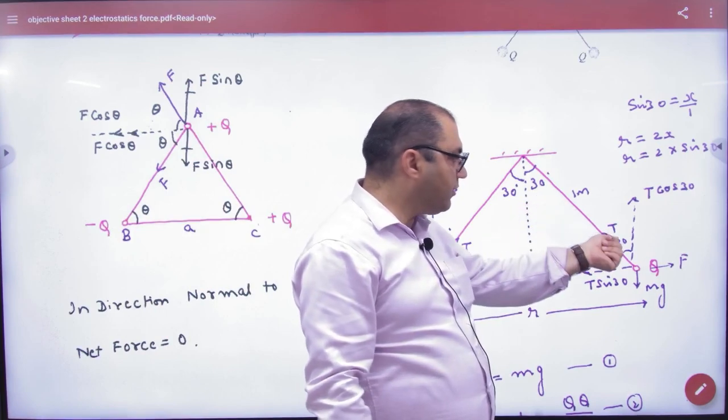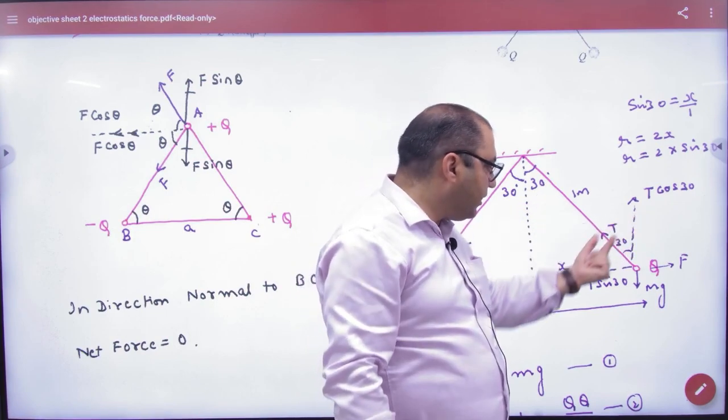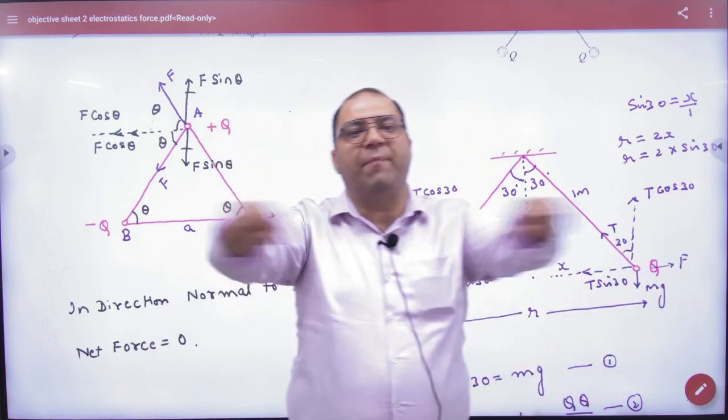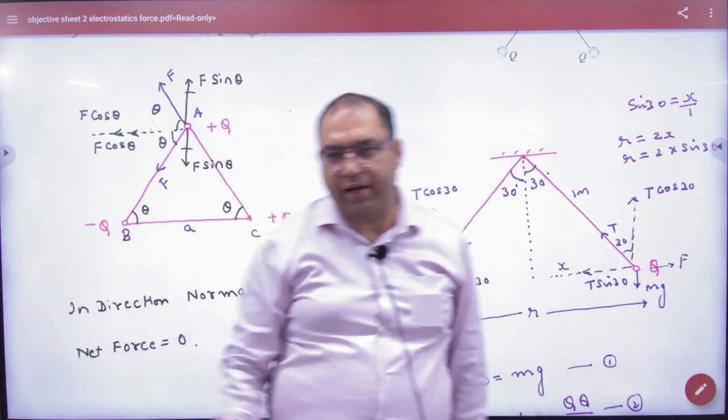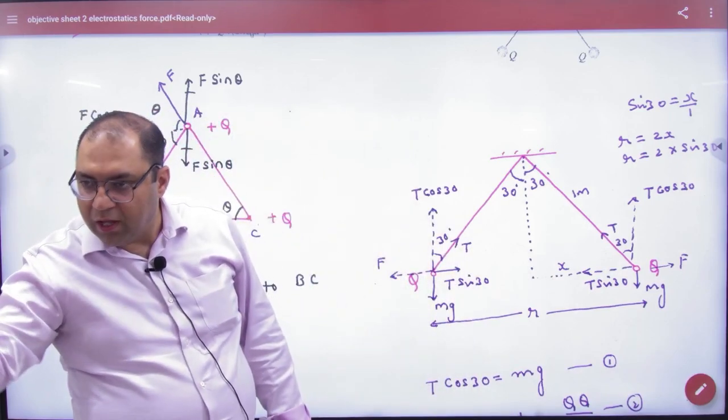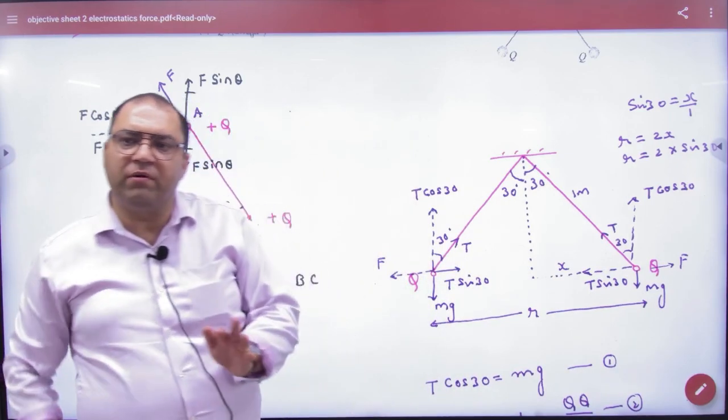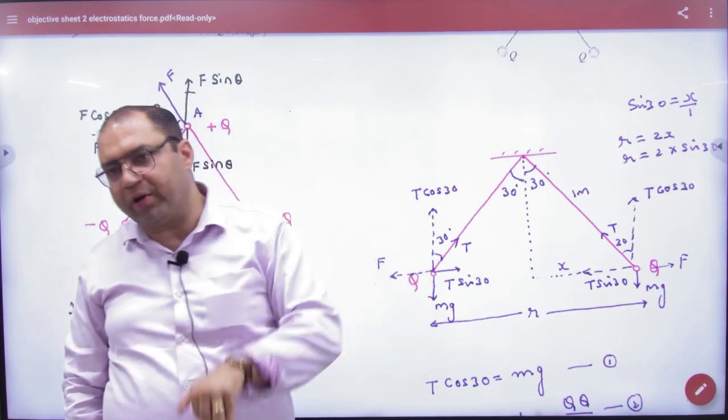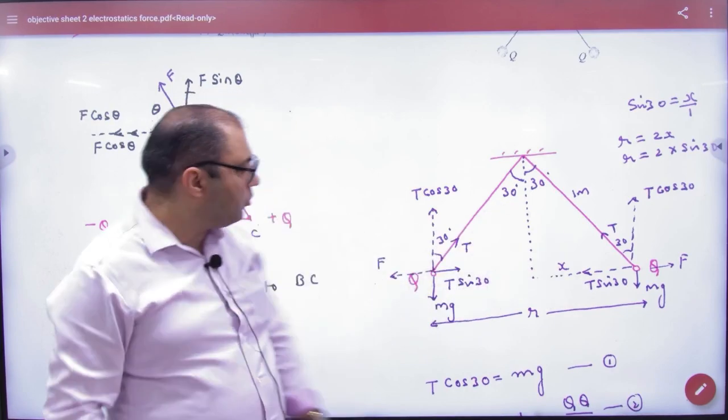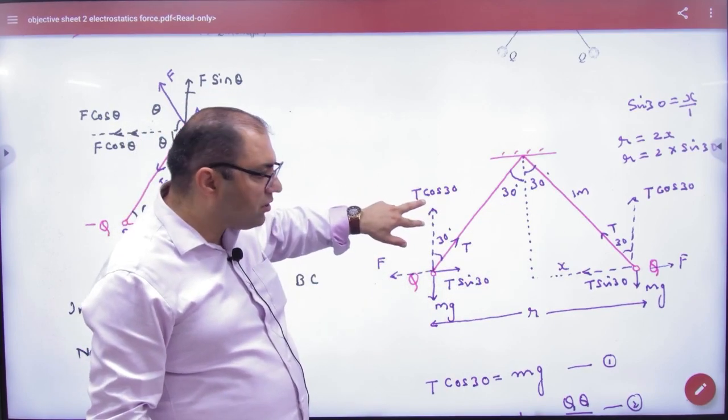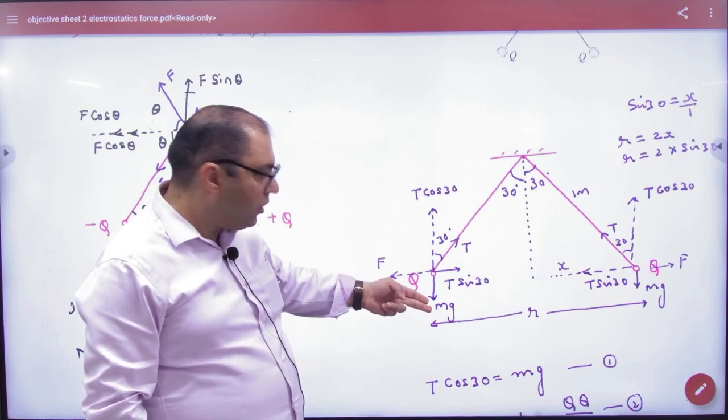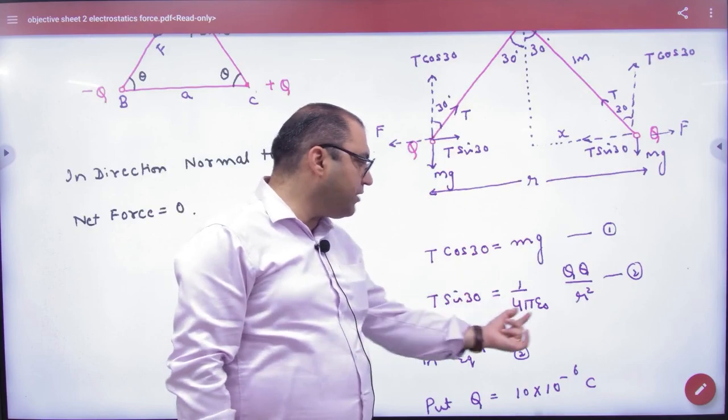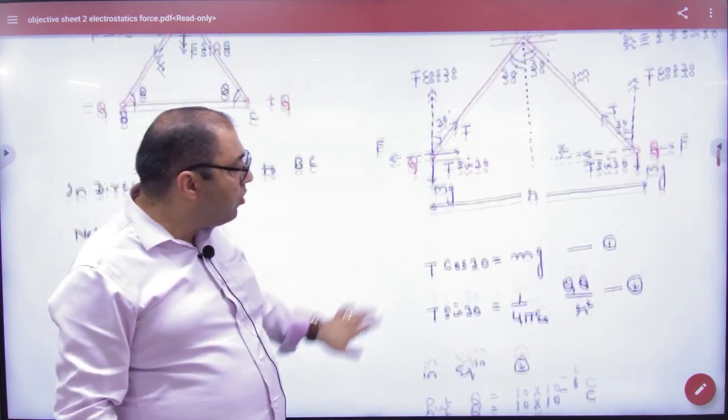Same diagram here. T, 30, 30, T cos theta, T sin theta, weight Mg and electrostatic force of repulsion. Because capital Q will repel. The diagram is clear. Now, why is it equilibrium? It means net force is zero. The Y axis forces will cancel Y, and X forces will cancel X. T cos 30 equals weight Mg, and T sin 30 equals force F.